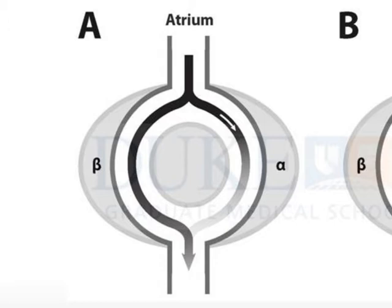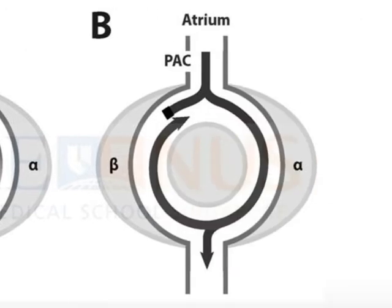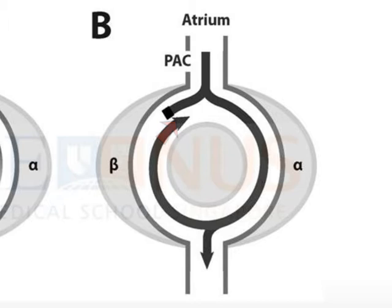A reentrant circuit is precipitated by a premature atrial complex — an atrial conduction that comes earlier than usual. This finds the slow-recovery beta track refractory from the previous beat. Thus, the signal is conducted down the slow conducting alpha track. Because the alpha track conducts slowly, by the time it reaches the ventricle, the beta track is no longer refractory and is ready to conduct again. The signal is then conducted retrogradely up the beta track. On reaching the top, the fast recovery alpha track conducts the signal down again, and the reentrant loop is established.